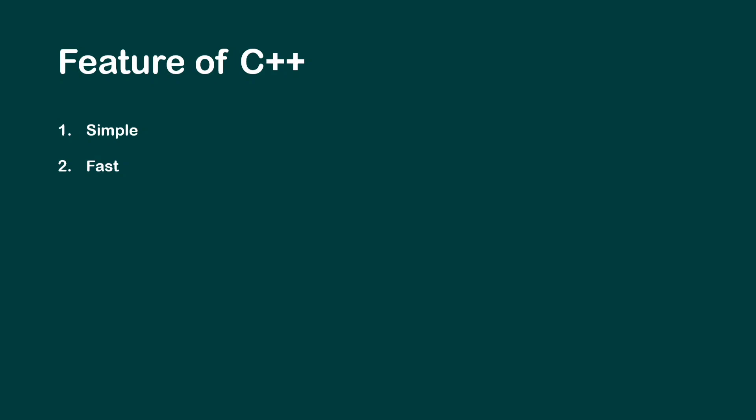Second, C++ is fast. It's built in such a way that it works fast and consumes less energy, which is why C++ is used for game development. Third, C++ is case sensitive — if a predefined keyword is in lowercase and you write it in uppercase, the compiler will throw an error. So keywords must always be written in the correct case.